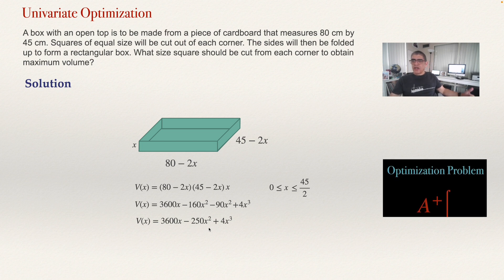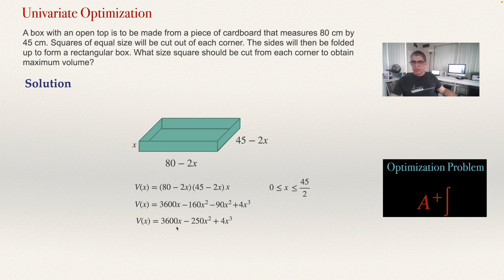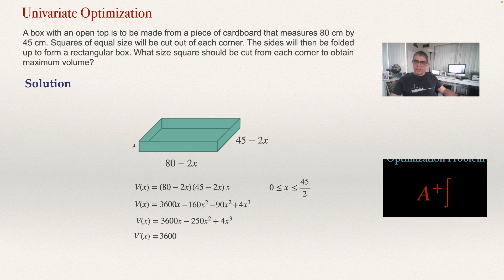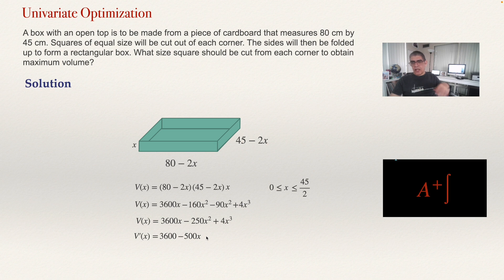Let's get the derivative of this. The derivative of the volume with respect to x: the derivative of 3600x is 3600. The derivative of minus 250x squared is minus 500x, since the exponent 2 multiplies 250. The derivative of 4x cubed is 12x squared, since 3 times 4 equals 12 and the exponent goes down by one. So dV/dx equals 3600 minus 500x plus 12x squared. This is the expression we will set equal to zero.